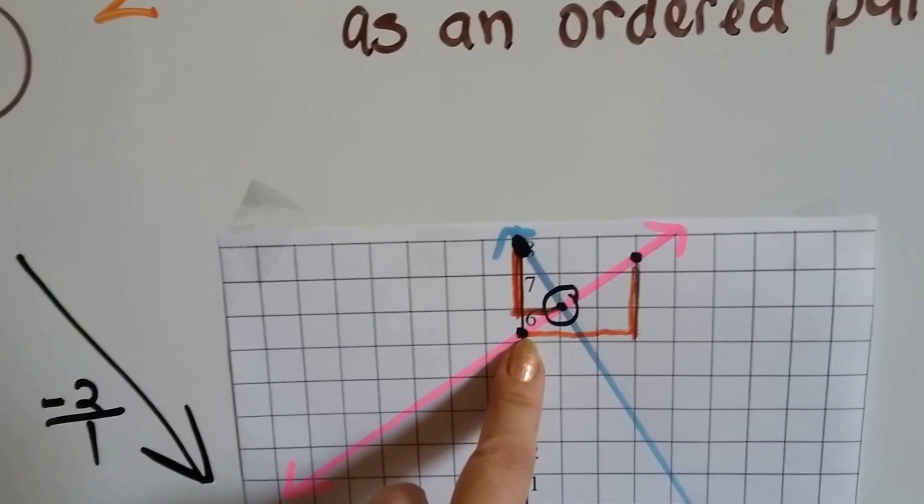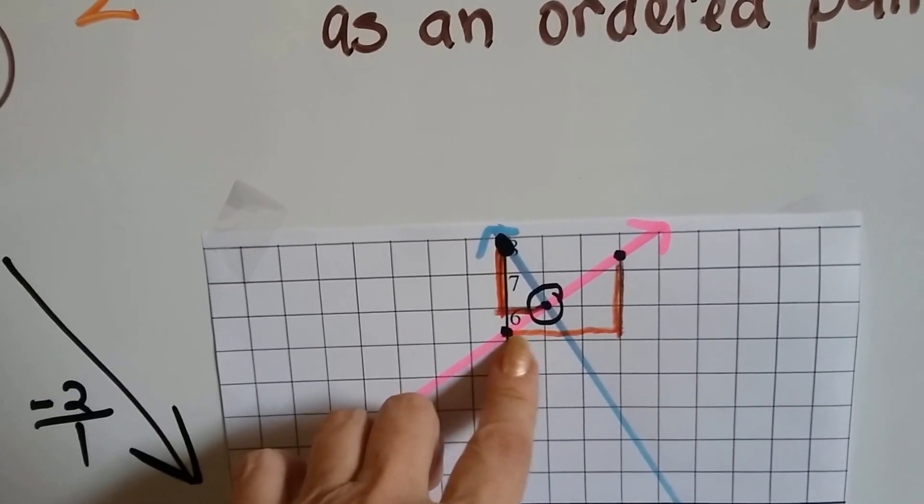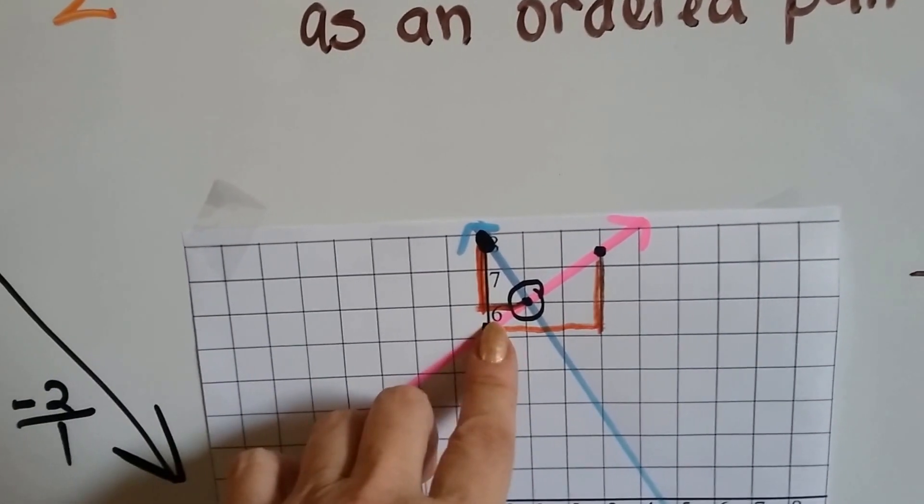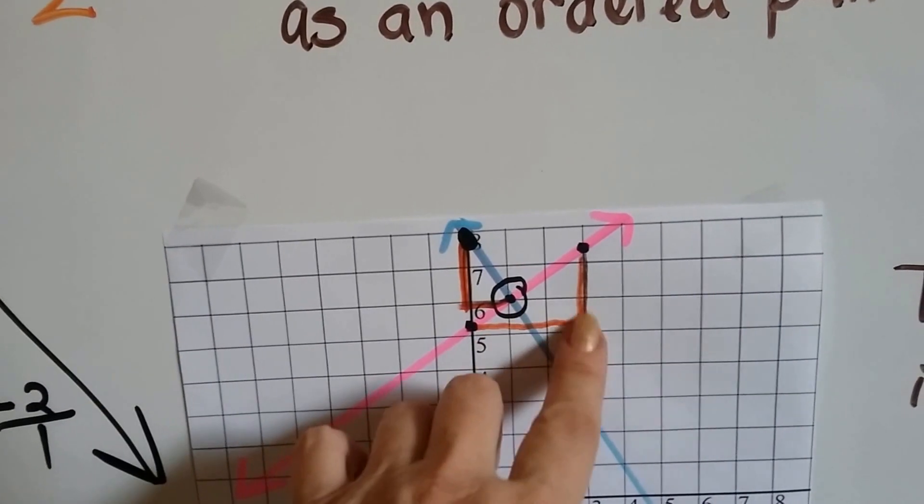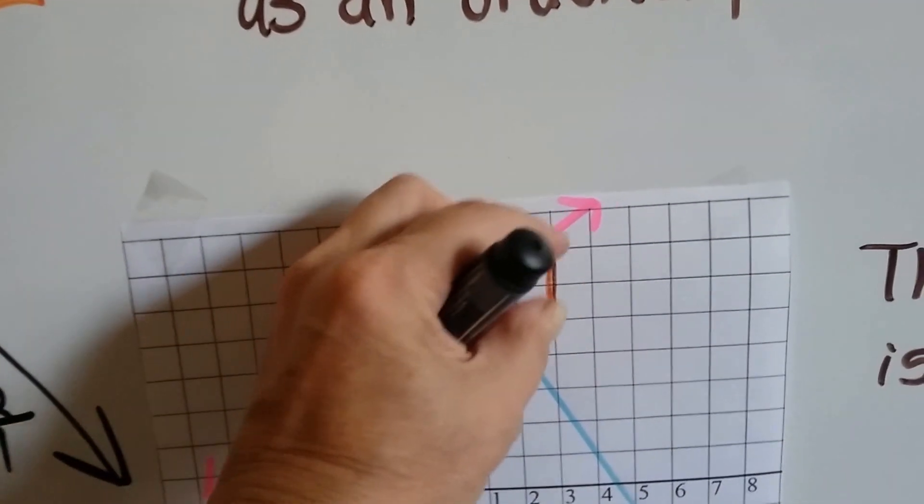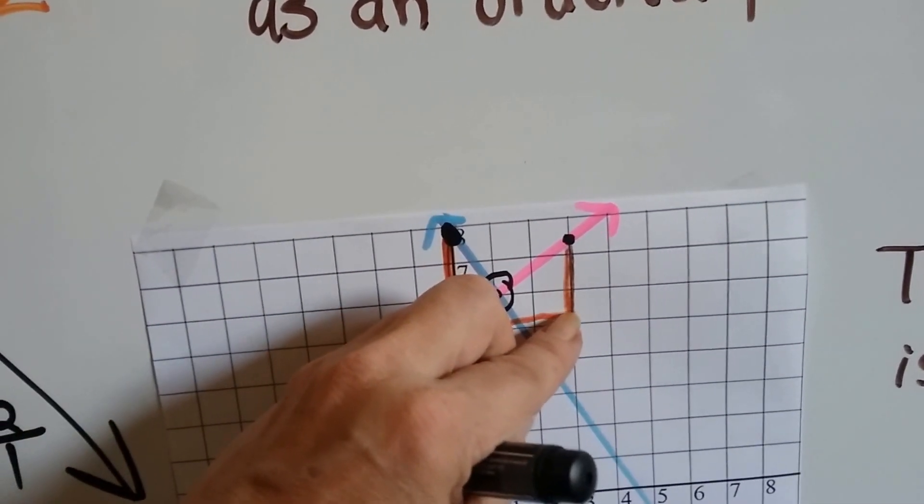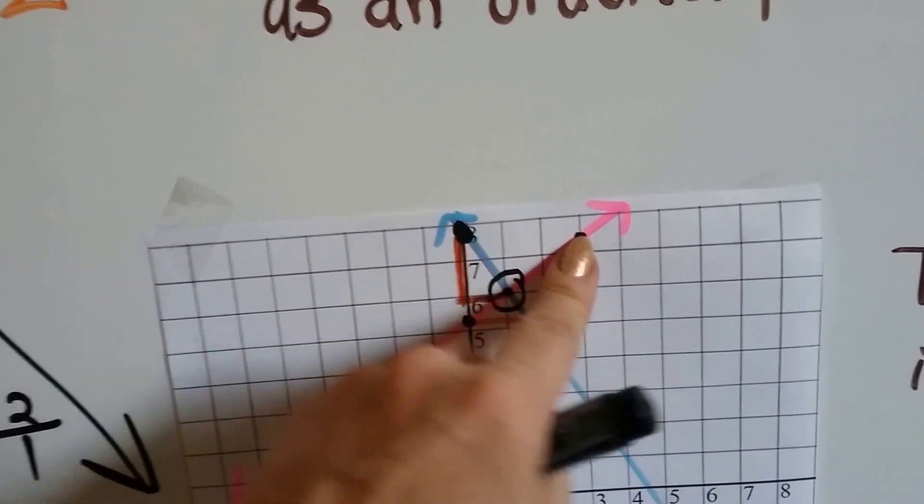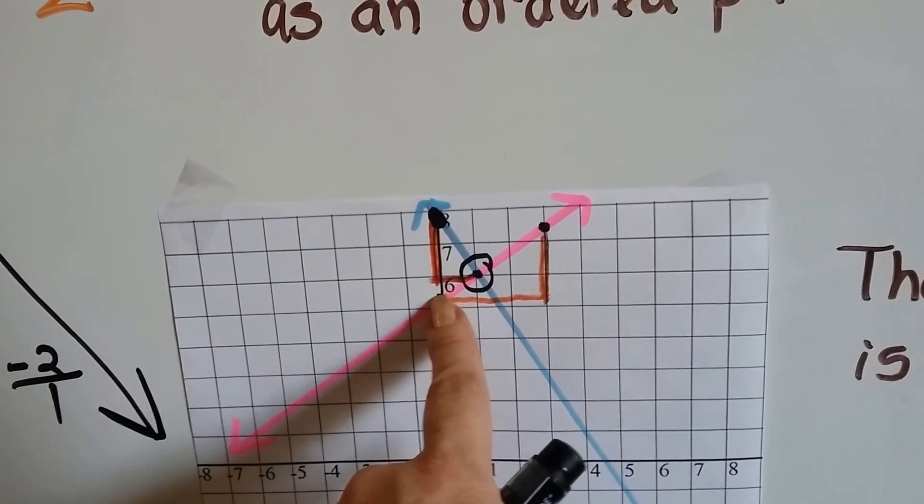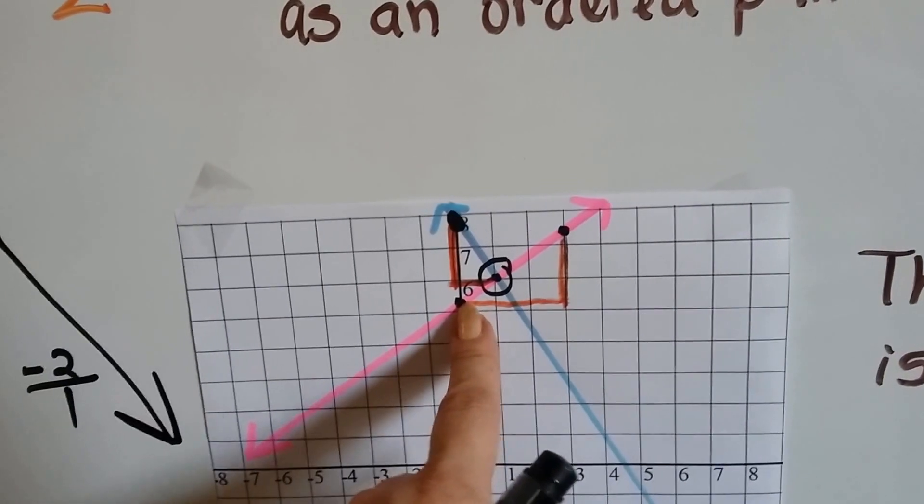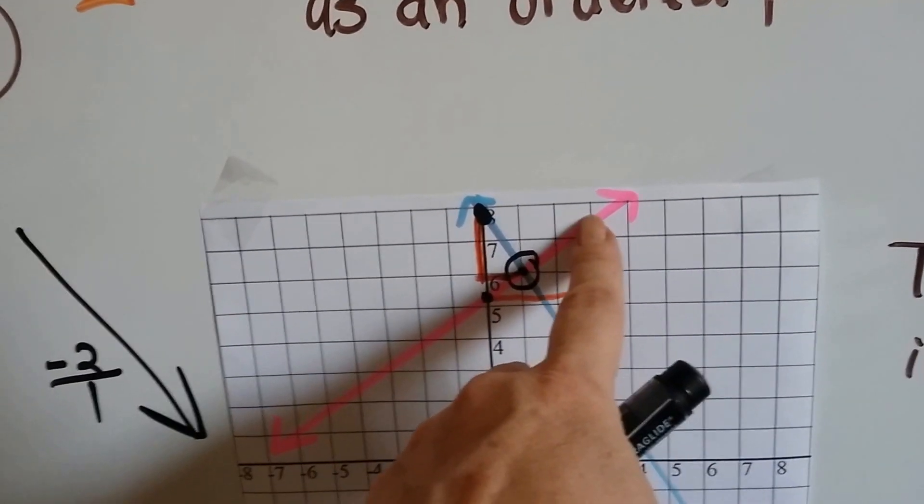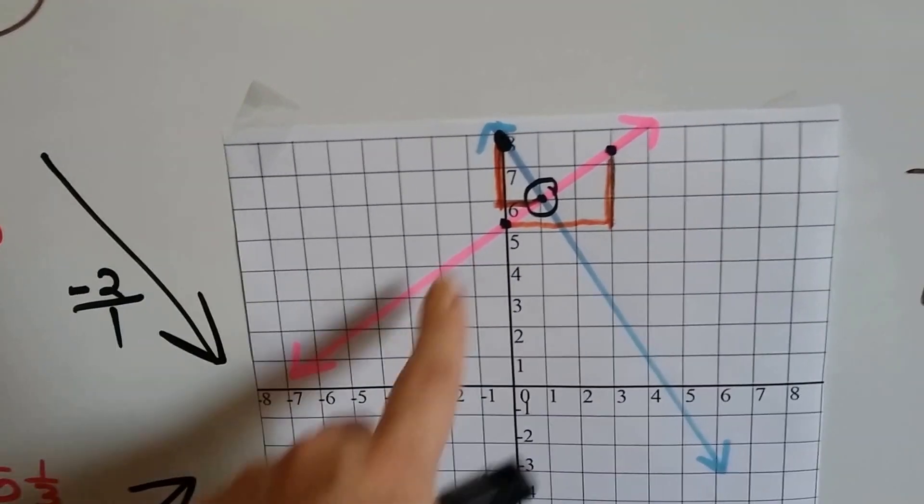So we're right here at 5 and a third. We need to go up 2. And over 3. So here's our run: 1, 2, 3. And we need to go up 2. So since we're at a third, we're going to be up here at a third. So I put my point, and then I drew my line through the 5 and a third spot on y and that point. And I got my pink line.